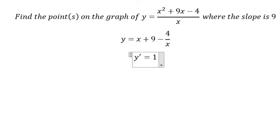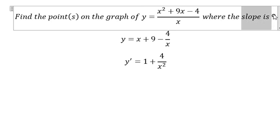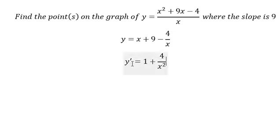We get 1 plus 4 over x squared. The question asks to find the slope is 9, so we put 9 equals 1 plus 4 over x squared.